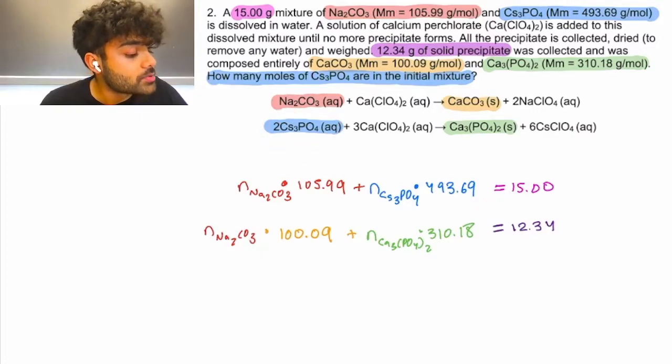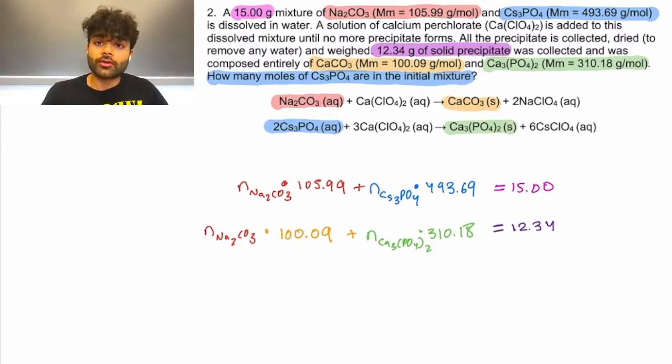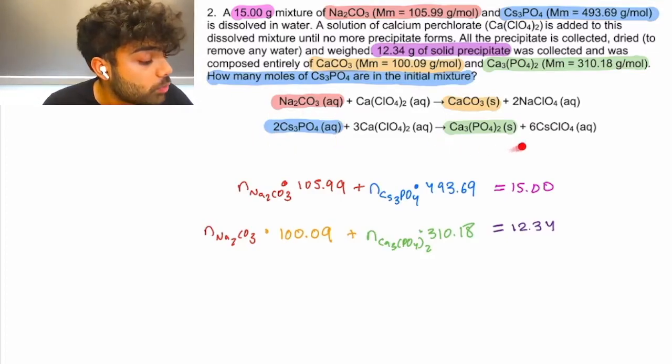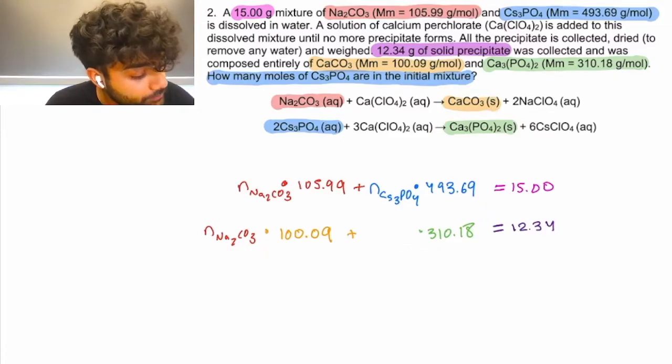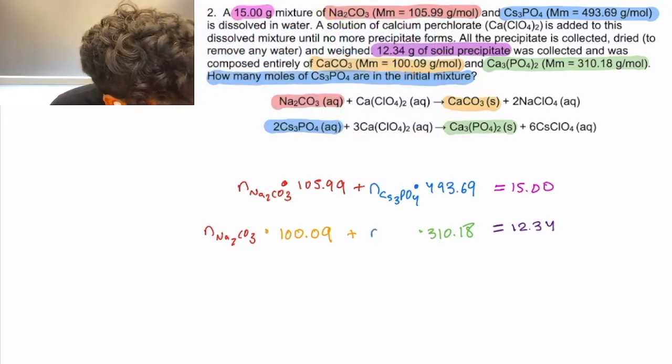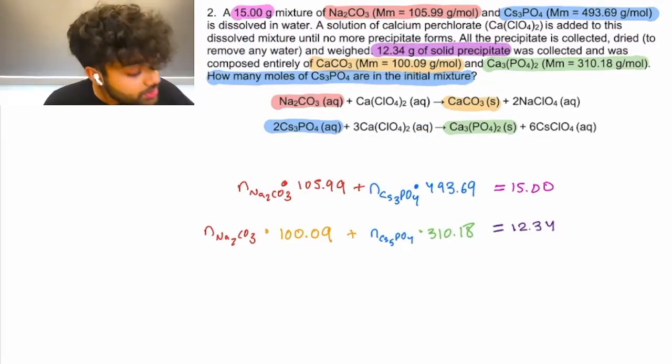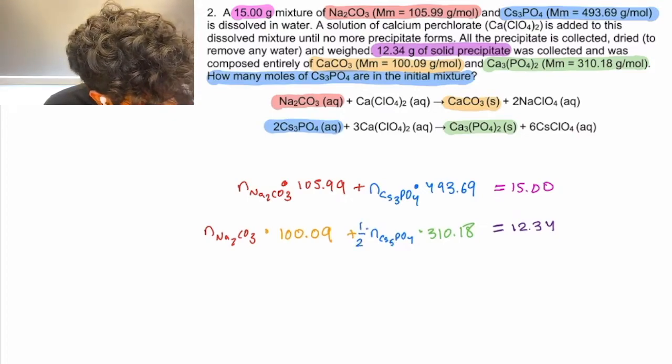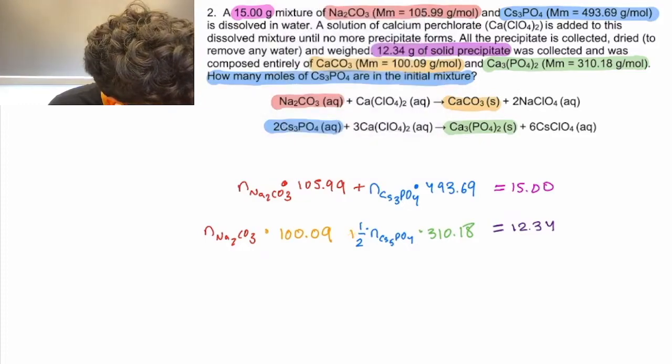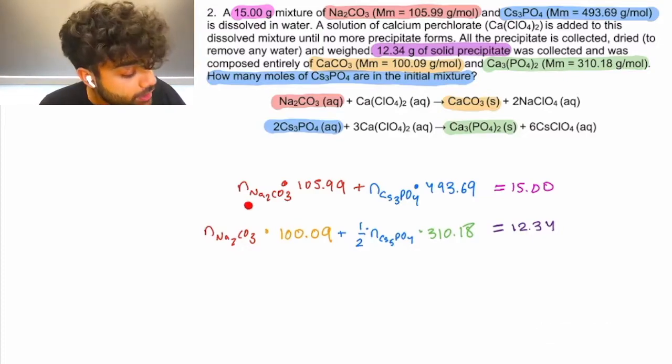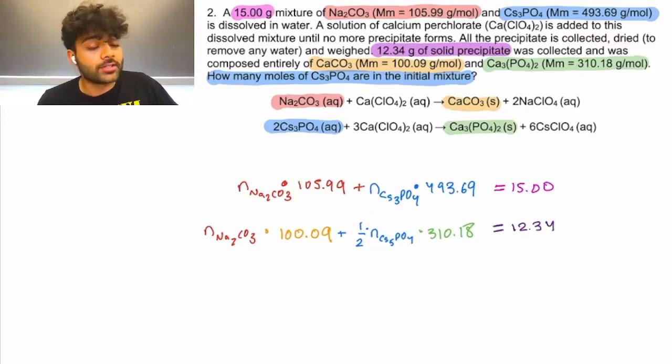Now, our CS3PO4 is what forms our Ca3PO42. However, they are not in a 1 to 1 molar ratio. We see that for two moles of CS3PO4, there is one mole of Ca3PO42 formed. So, we can substitute in here for moles of CS3PO4, but we need to account for that 1 to 2 molar ratio. So, we multiply by 1 half. And let me give ourselves a little more room here. Great! So, now we have two variables only, moles of Na2CO3 and moles of CS3PO4. And we have two equations, so we can solve for our variables.